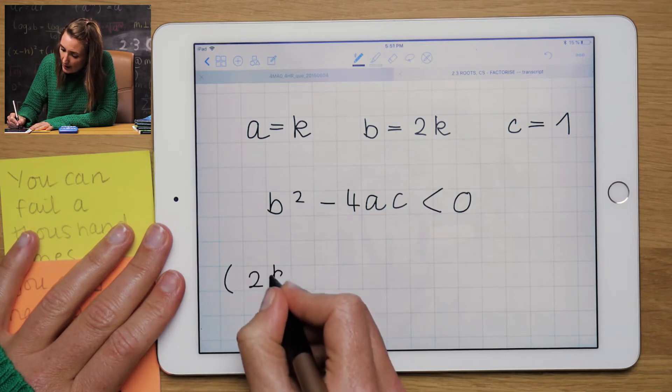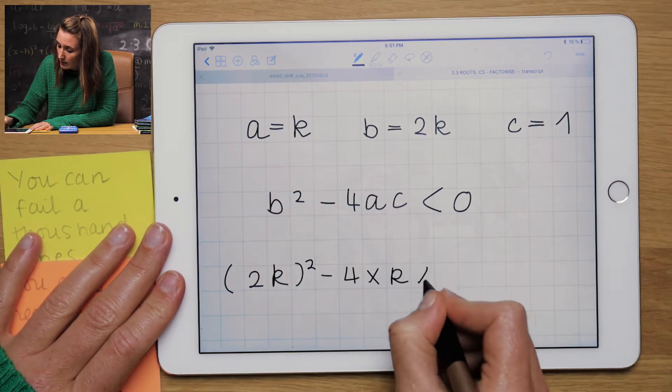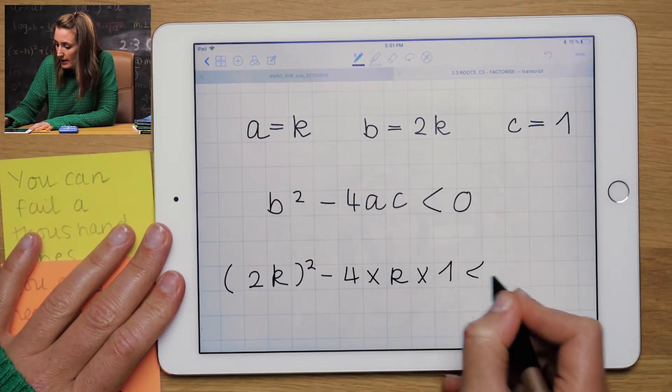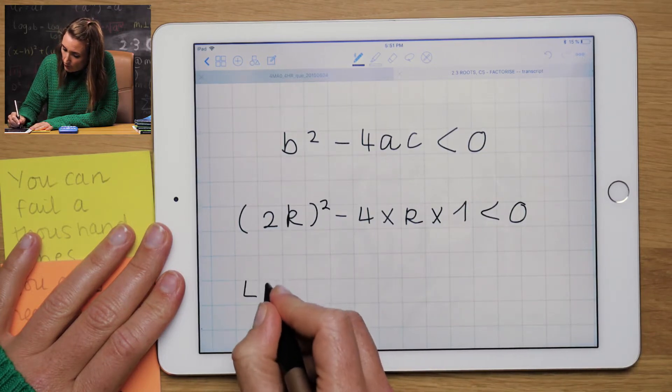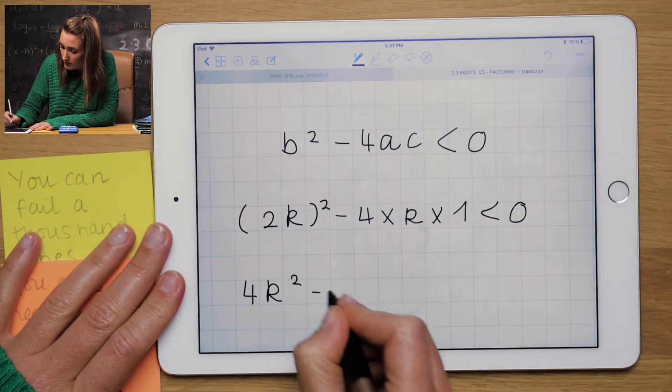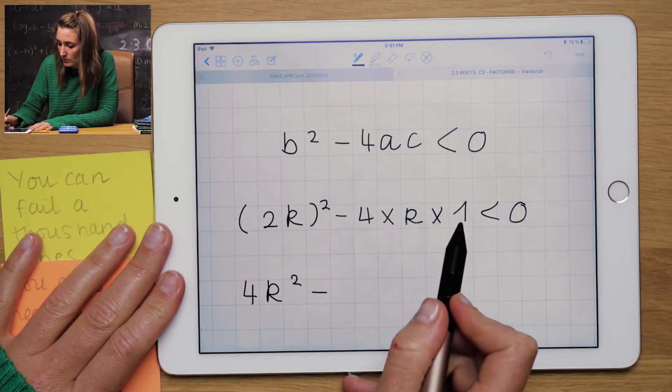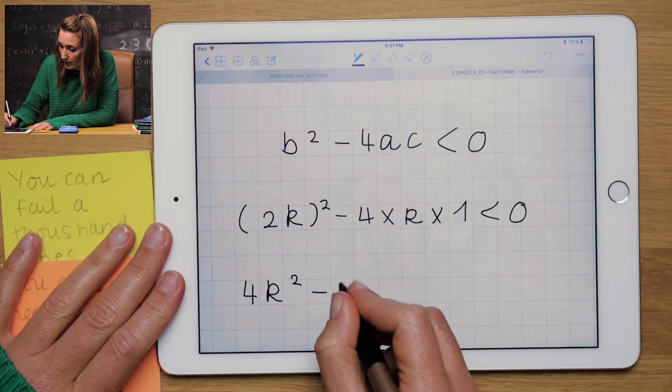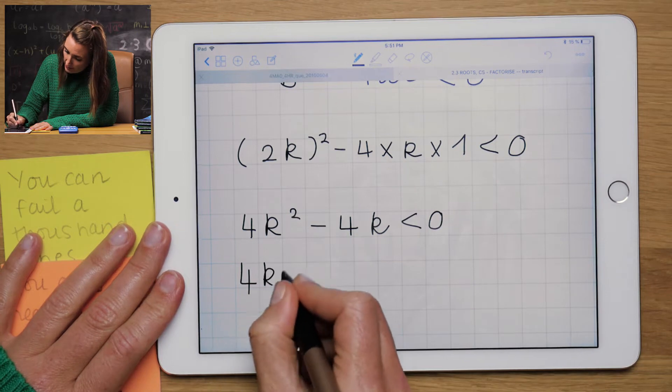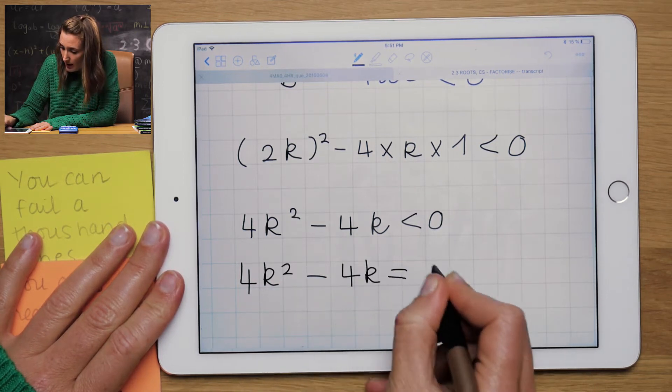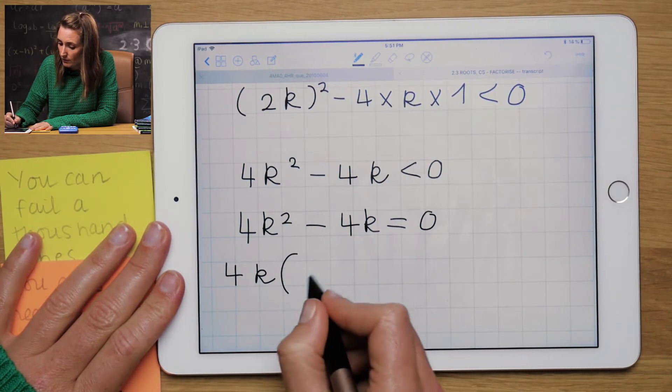B squared is 2k squared minus 4 times a is k times c is 1 less than 0. So 2k squared is 4k squared. Because you've got to square both the 2 and the k. 4 times k is 4k times 1, 4k. So minus 4k less than 0. Remember, to graph it, we pretend that it was equal to 0.